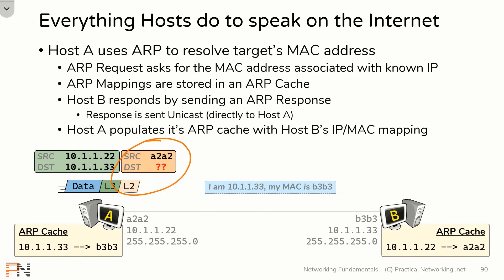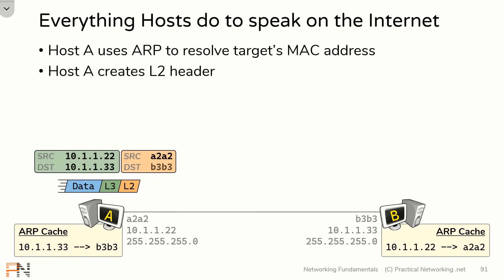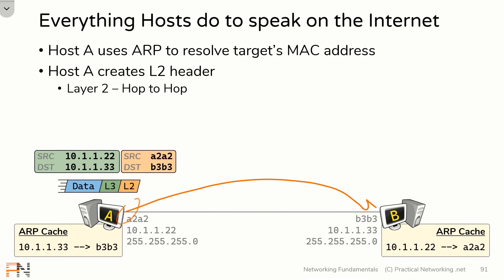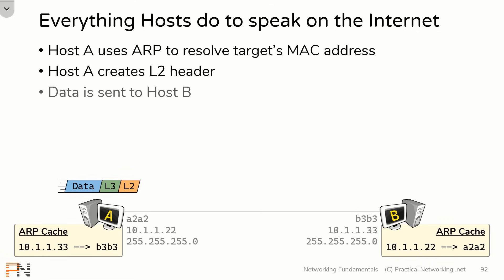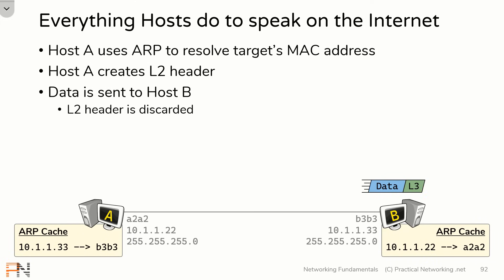Now host A has everything it needs to complete the layer 2 header for the data it was initially trying to send to host B. The layer 2 header is going to include a source MAC address of host A's MAC address and a destination MAC address of host B's MAC address. This layer 2 header will accomplish the goal of hop-to-hop delivery, which finally lets this data be sent to host B. Upon arriving to host B, host B will discard the layer 2 header — the whole purpose of that header was to get the packet from this NIC to this NIC, and it did so successfully. Next, host B will discard the layer 3 header, whose only purpose was to get this data from host A to host B, and it did that successfully as well.